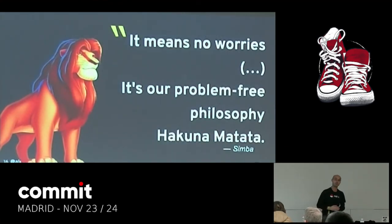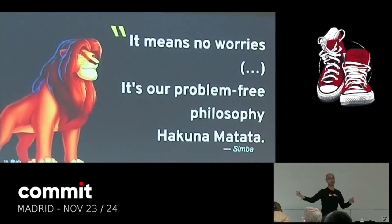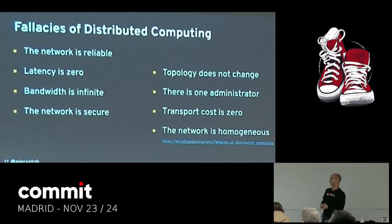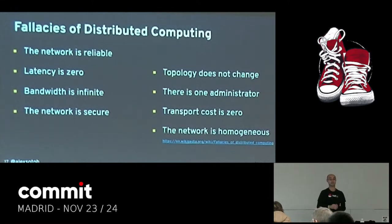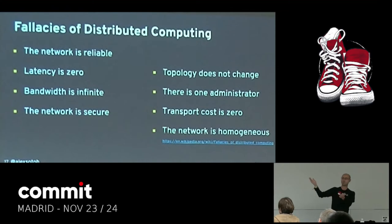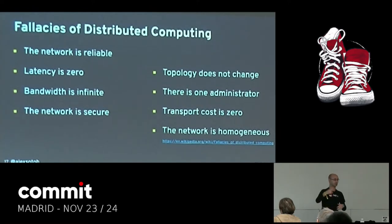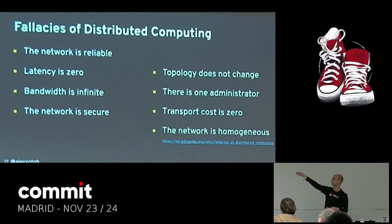From the developer's point of view, we think: hey, this works — I'm just taking my monolith, and instead of doing memory calls by calling a method, I'm replacing this memory call with an HTTP client, and that's all. The problem is the fallacies of distributed computing. As a developer, sometimes we assume that the network is reliable — that it's always there, that latency is zero, that bandwidth is infinite, that the network is secure, and that the topology does not change.